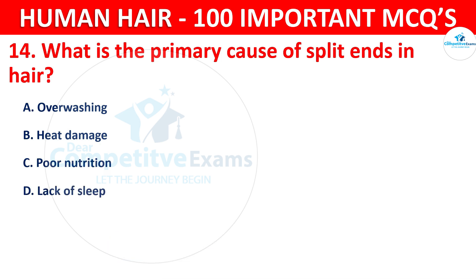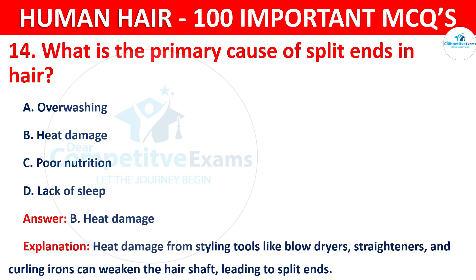The correct answer is B — heat damage. Heat damage from styling tools like blow dryers, straighteners, and curling irons can weaken the hair shaft, leading to split ends.